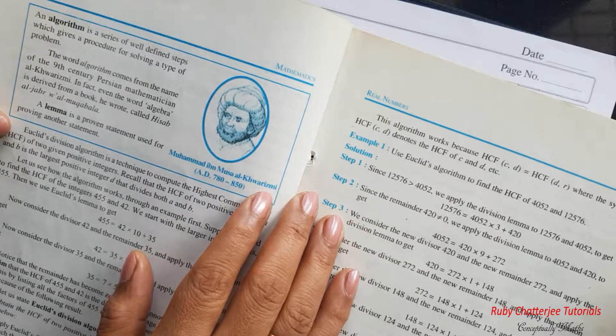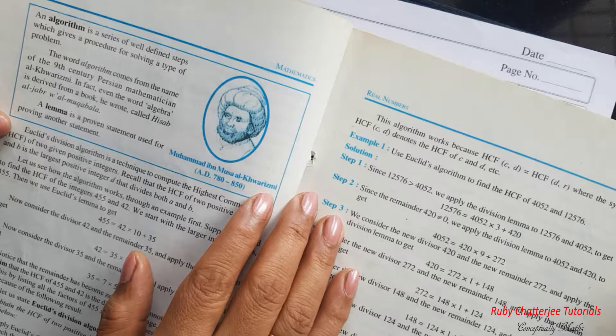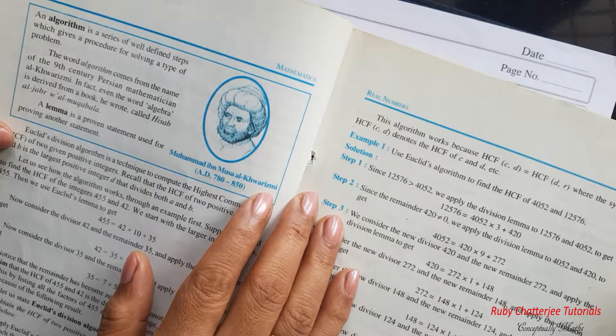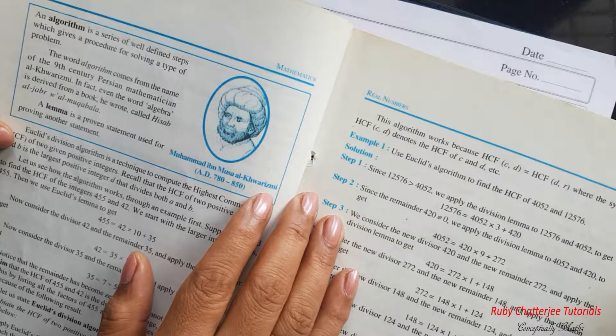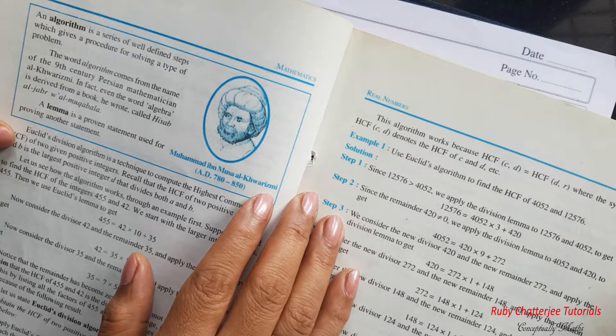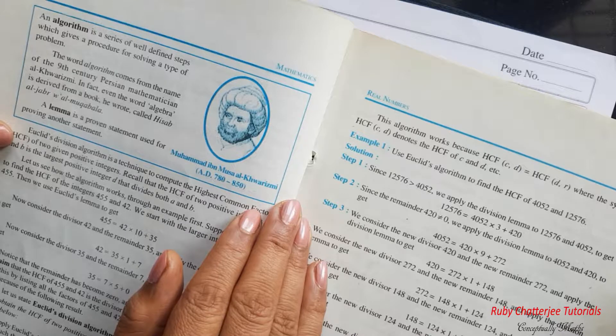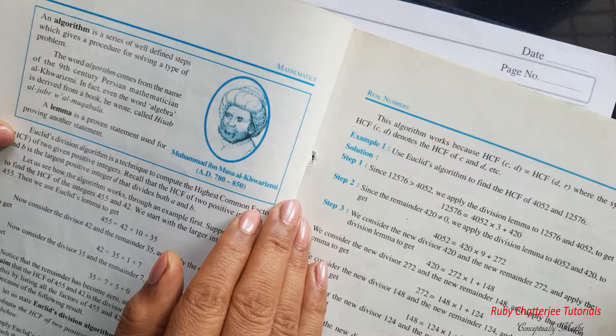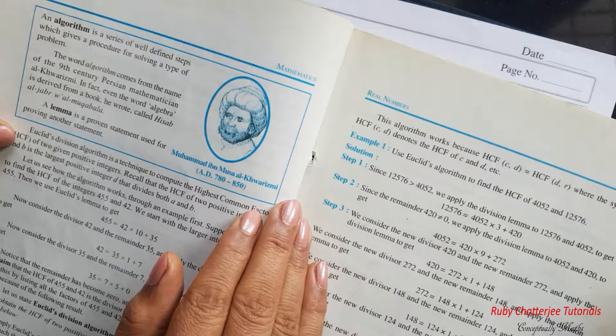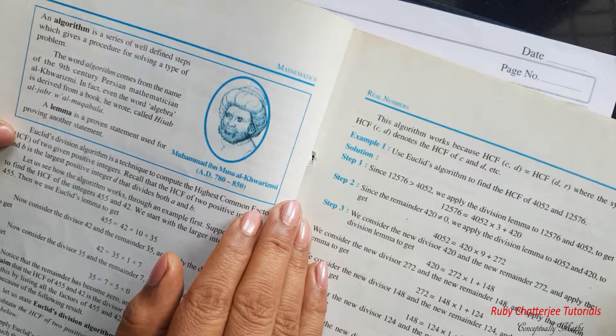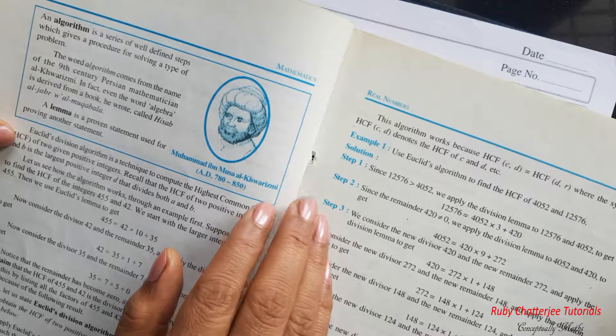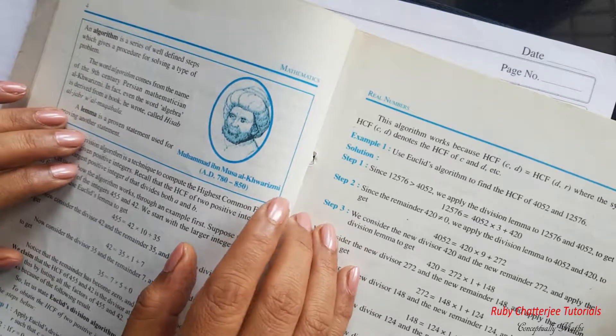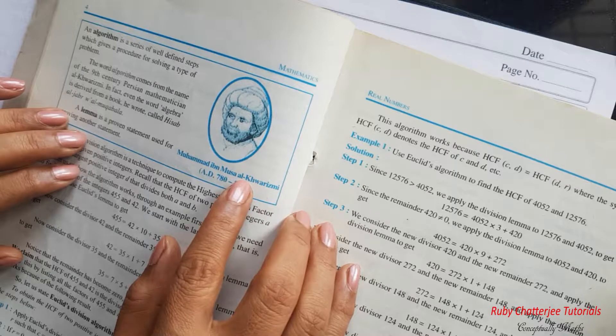He wrote a treatise on Hindu-Arabic number system in Arabic language which was translated by the westerners in Latin in the 12th century with the title algorithm de numero indorum, which means algorithm on the numbers of the Indians in English. So basically the word algorithm was the Latinization of his name, Al-Khwarizmi.